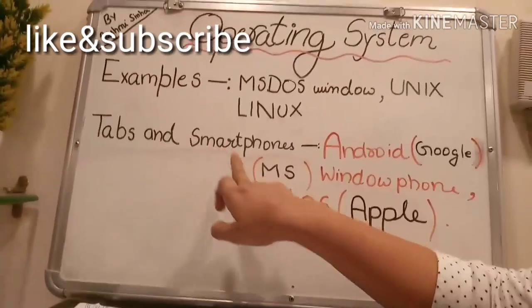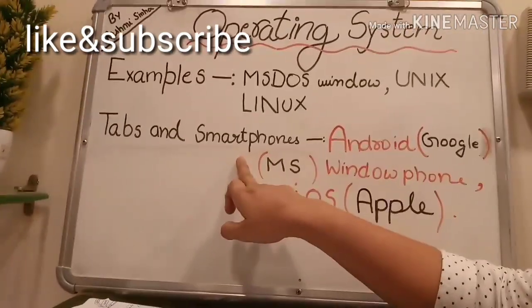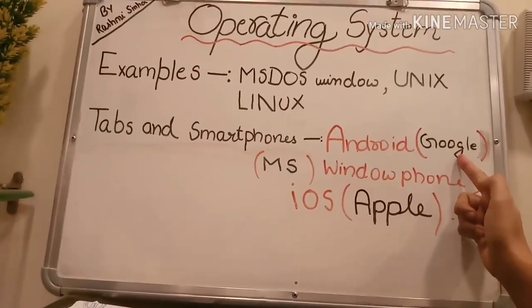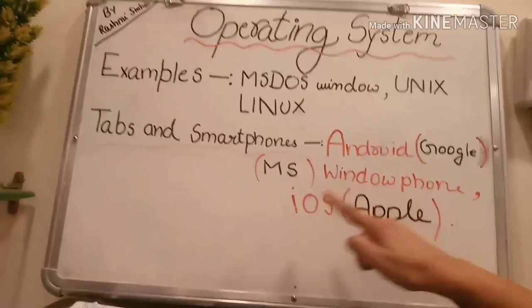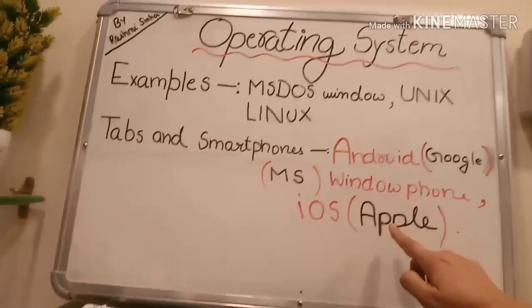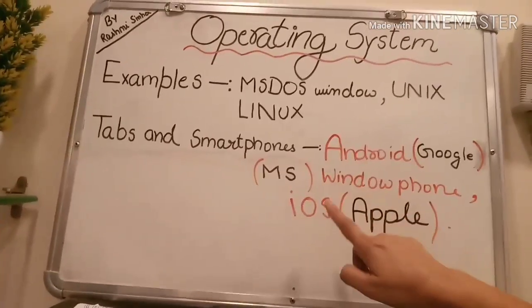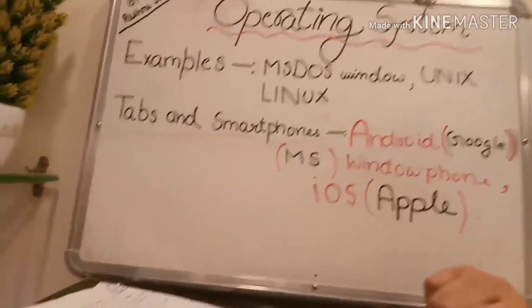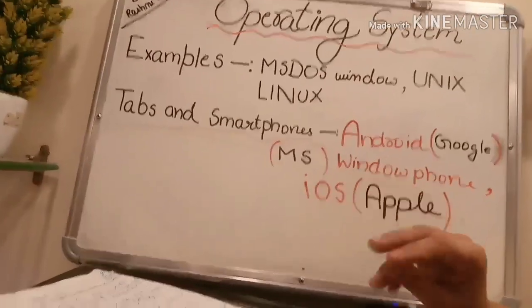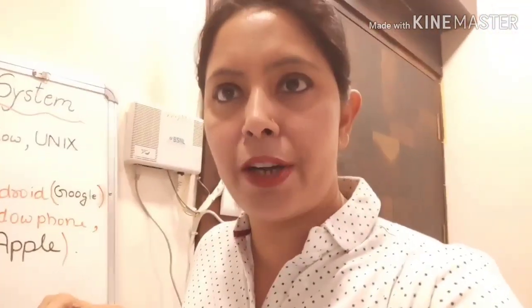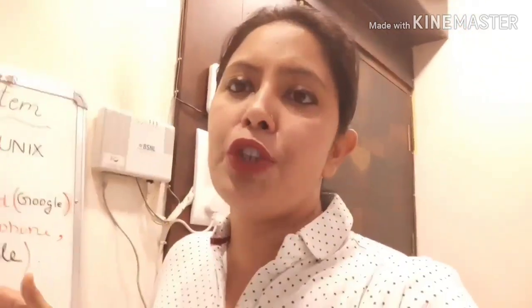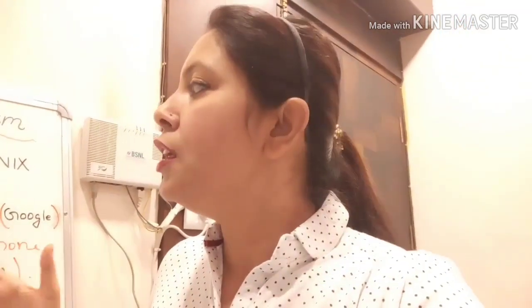Tablets aur smartphones ke liye alag operating systems banaye gaye hain — Android, jo Google company ne banaya; Windows Phone, jo Microsoft ne banaya; aur iOS, jo Apple company ne banaya. Ab aap soch rahe honge ki jab already itne operating systems hain, toh these extra operating systems for tablets and smartphones ka kya use hai?